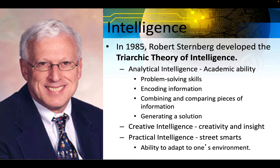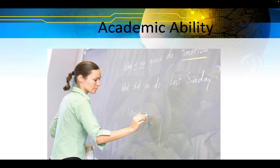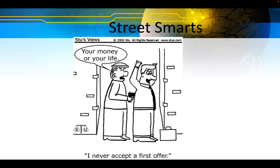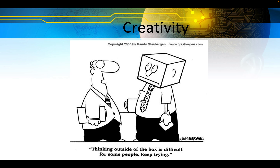In 1985, Robert Sternberg developed the triarchic theory of intelligence: analytical intelligence — academic ability, problem-solving skills, encoding information, combining and comparing pieces of information, generating a solution; creative intelligence — creativity and insight; and practical intelligence — street smarts, the ability to adapt to one's environment.